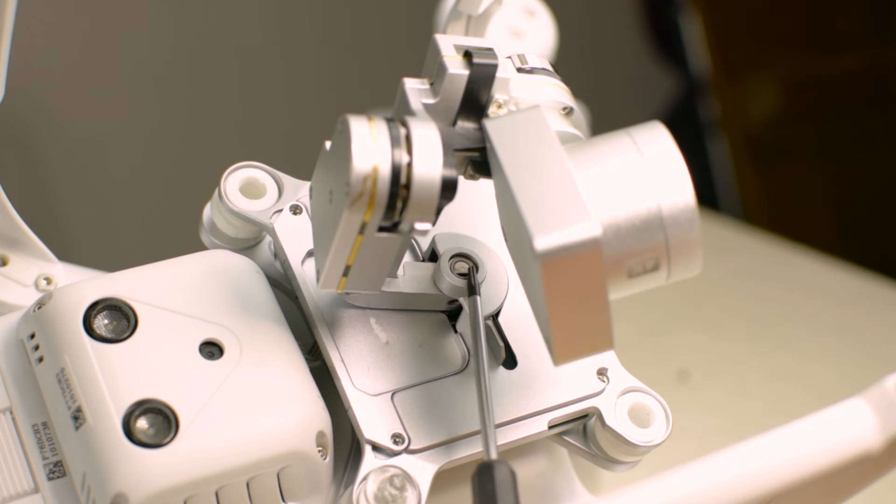They call that a keyed shaft. You want your screw hole to be lined up with the flat part of the keyed shaft and that's how I have it right now. But that's not how it was when I got it. This flat section was actually 90 degrees clockwise, so it was over here.